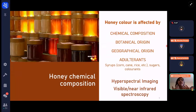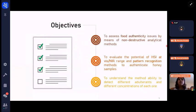Since color is one of the first aspects that we see when we buy this type of product, we tried to use a fast and non-destructive method based on hyperspectral imaging and visible and NIR spectroscopy to evaluate if it's possible to authenticate honey samples and discriminate from the adulterated ones. The objective is to assess food authenticity issues and evaluate the potential of hyperspectral imaging using pattern recognition methods.